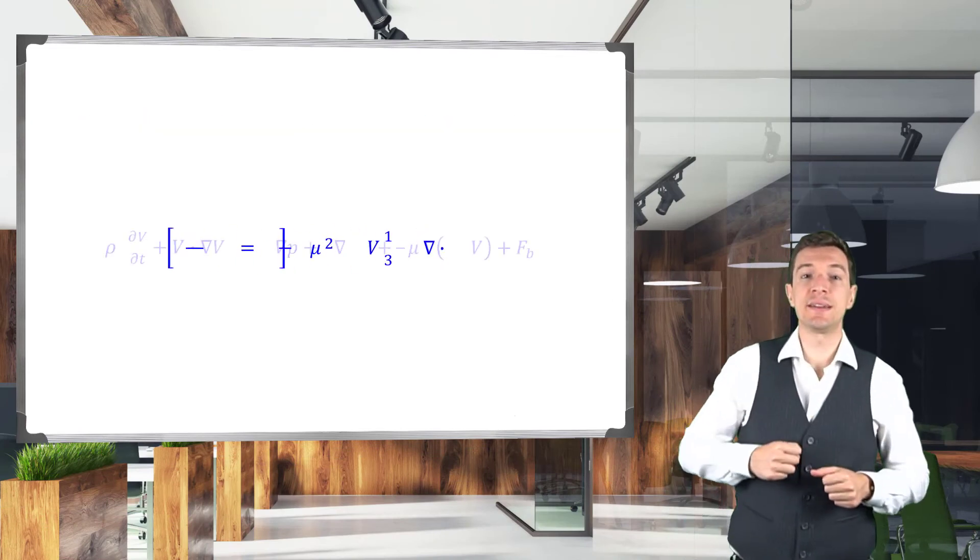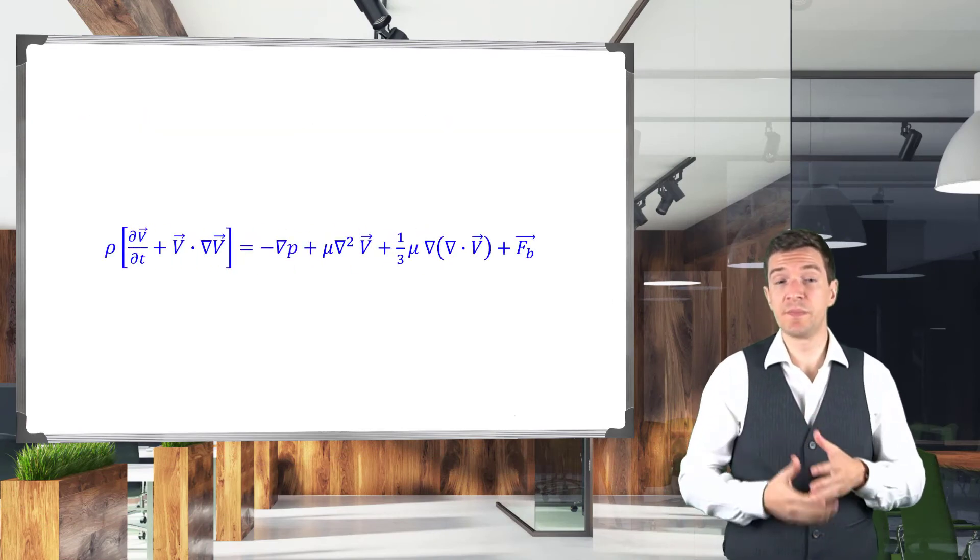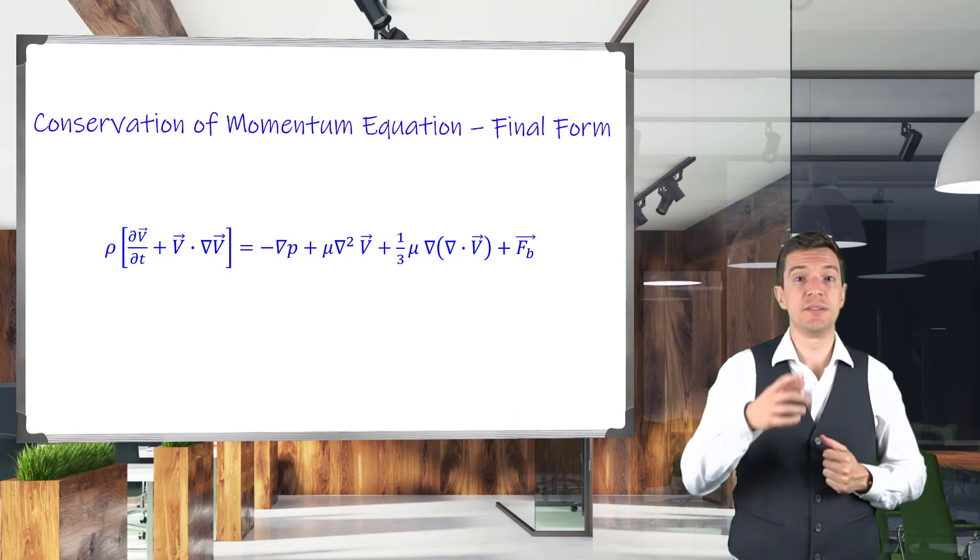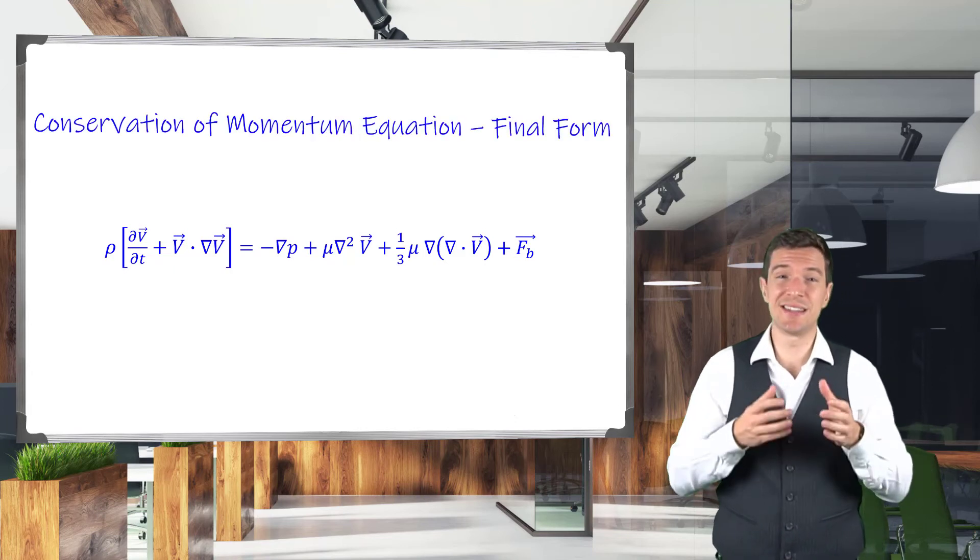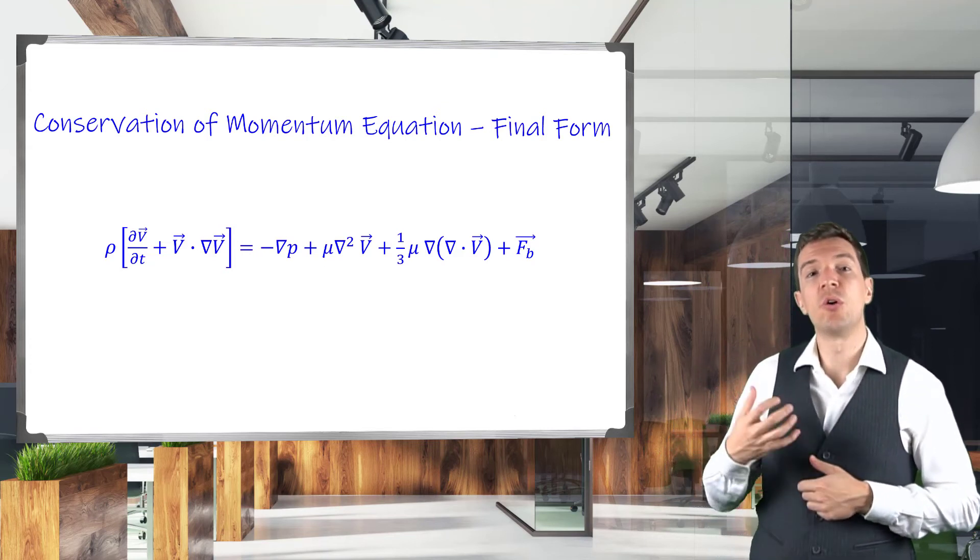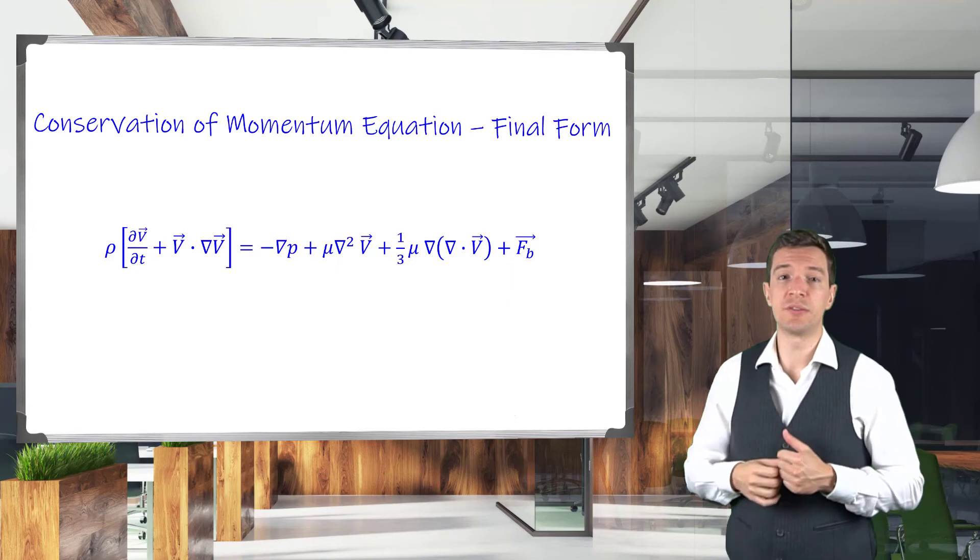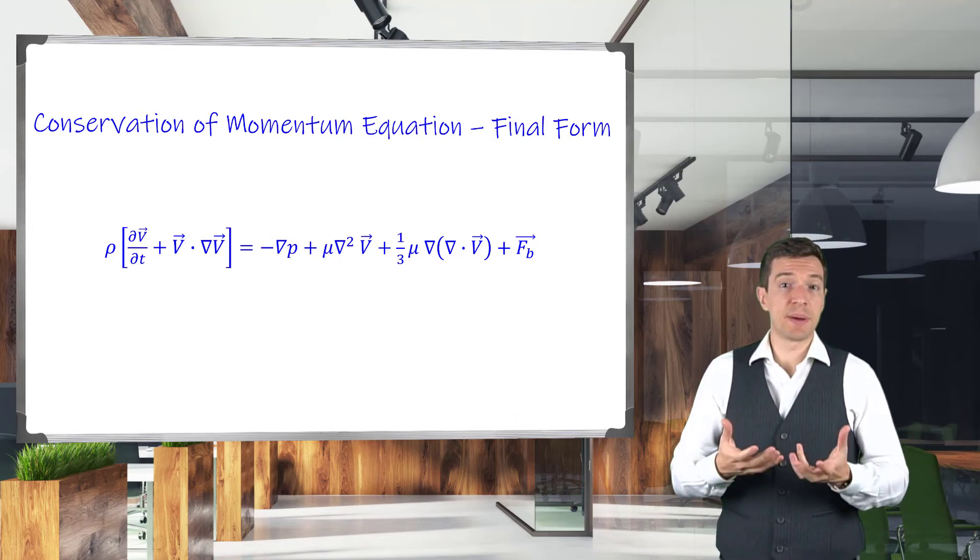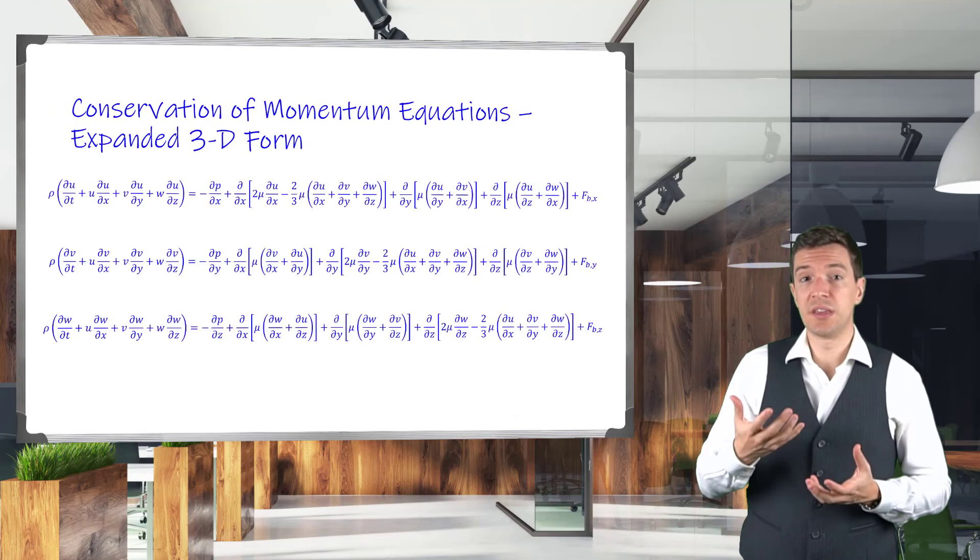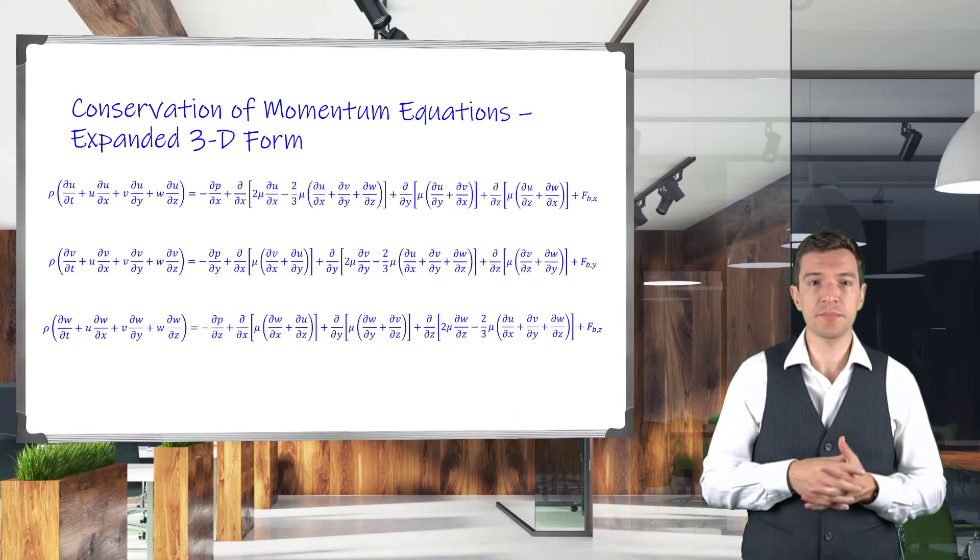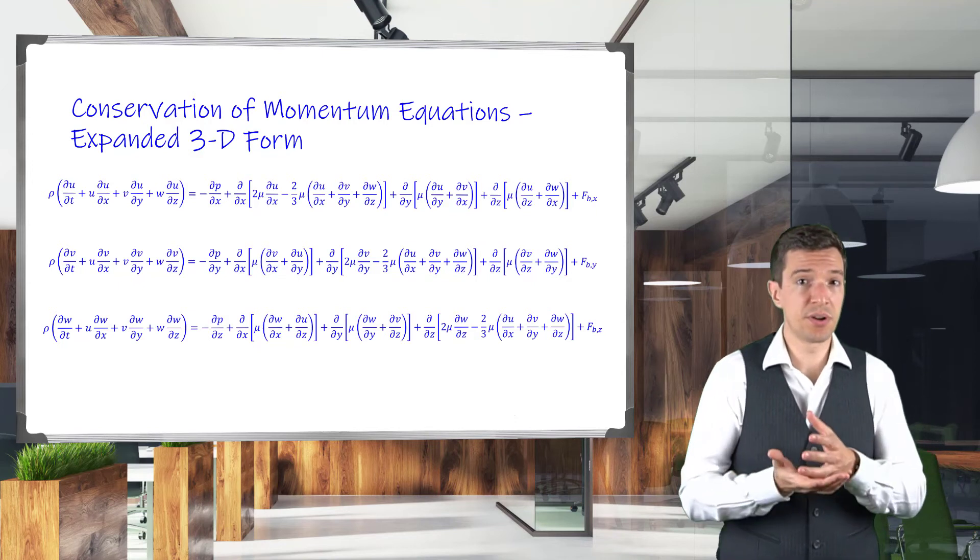We can then substitute this expression into the conservation of momentum equation. This form of the equation is typically referred as the non-conservative form or convective form of the momentum equation. We can expand the equation into the full 3D form for all the components to have a reference point for subsequent modeling.